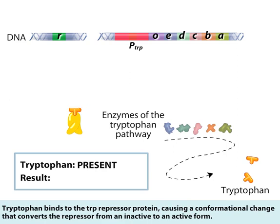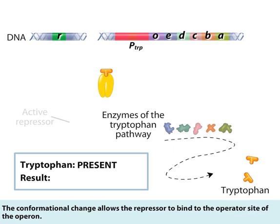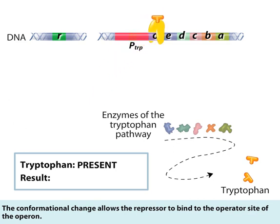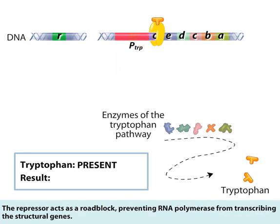Tryptophan binds to the TRP repressor protein, causing a conformational change that converts the repressor from an inactive to an active form. The conformational change allows the repressor to bind to the operator site of the operon.